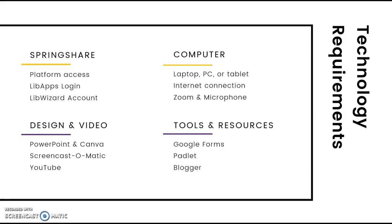Technology requirements are divided into two categories: participant and instructor. Participants will need the SpringShare and computer items. The workshop instructor and course designer will use all of the resources listed. There will be no additional costs affiliated with the workshop. The library has budgeted SpringShare platform modules, and the university will provide access to computers, internet, and Zoom.